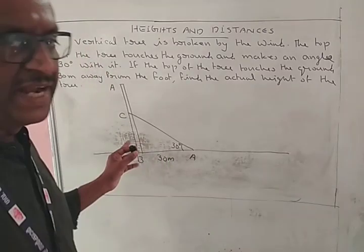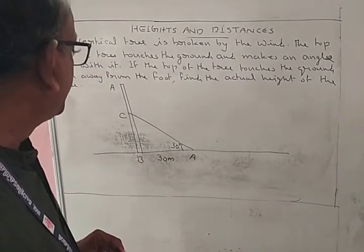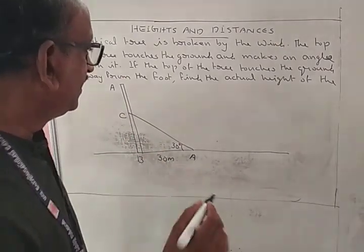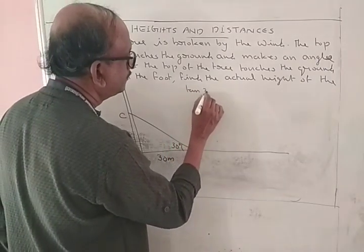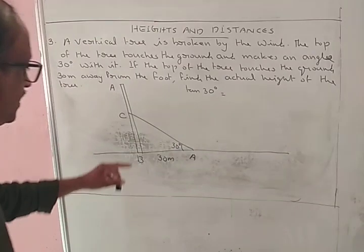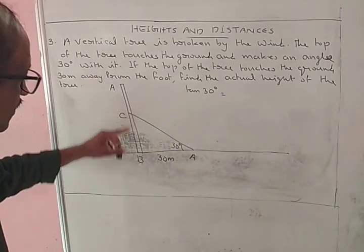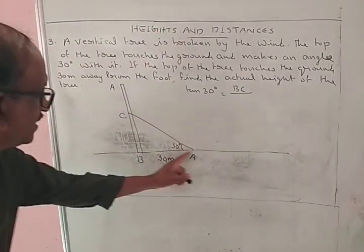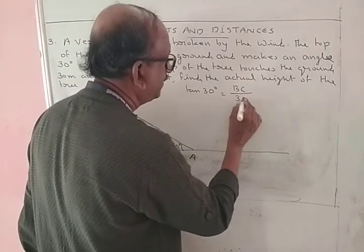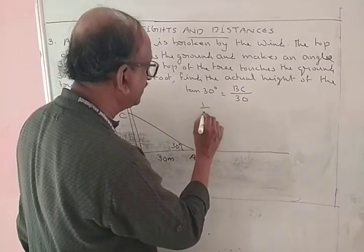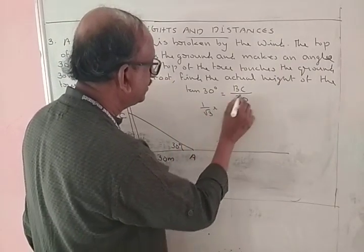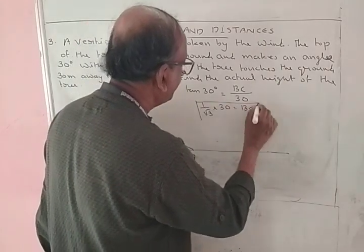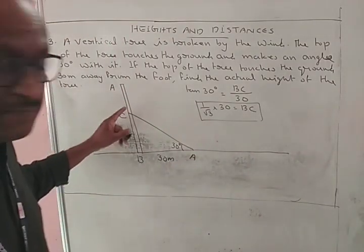This is a right triangle. First find tan 30. Tan 30 is equal to the opposite side BC divided by the adjacent side, which is 30. Then cross multiplying, 30 into tan 30 is equal to BC. This is the lower part of the tree.